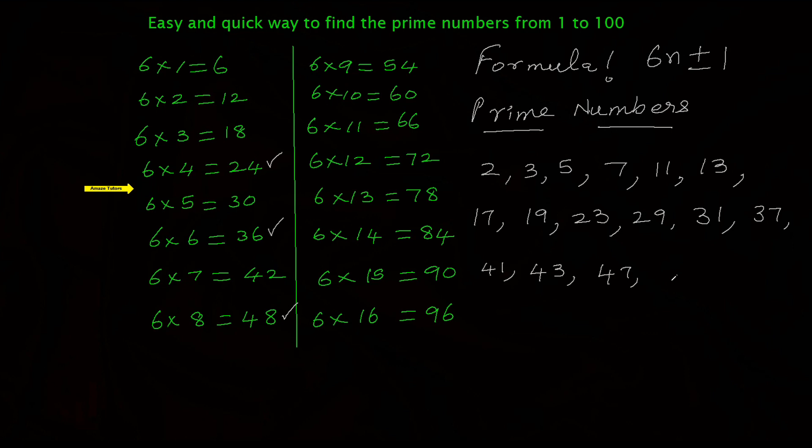Now go for the next multiple of 6: 54. Take away 1: 53. Add 1, again 55—don't consider 55 which is a composite number, not a prime number. Next multiple, 60. Take away 1: 59. Add 1: 61. They are all prime numbers.